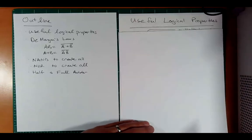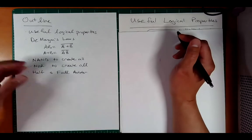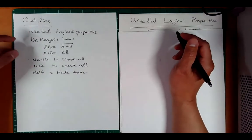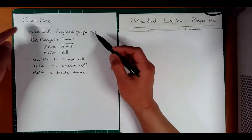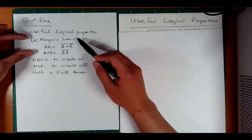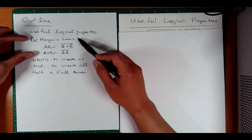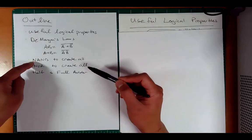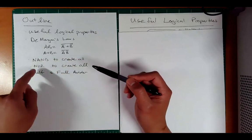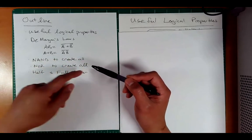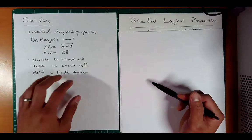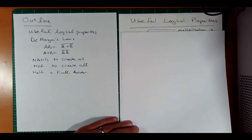Hi, this is ET370, Lecture 13. This will be a two-part lecture. The first part will cover useful logical properties — DeMorgan's Laws — and we'll use this to show that a NAND gate can be used to create all the other logic gates, and same with the NOR gate. In the second part, we'll look at a full and half adder circuit for adding binary.